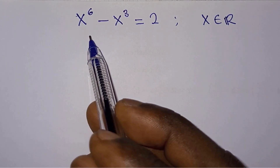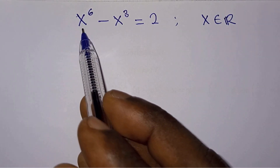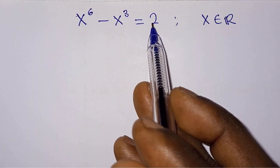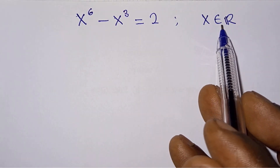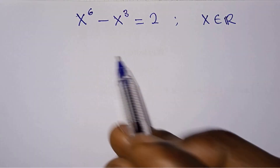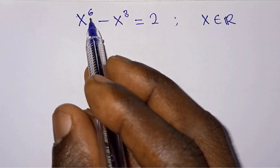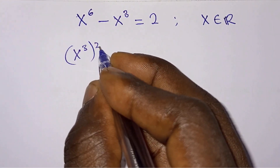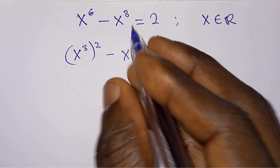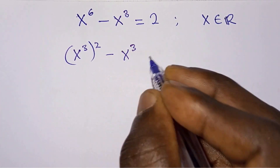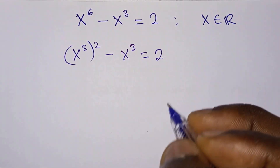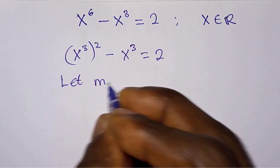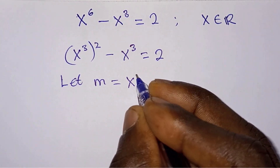Hello. In this video we find the values of x in x to the power 6 minus x to the power 3 is equal to 2, where x belongs to real numbers. So let's start. I'll write x to the power 6 as x to the power 3, all to the power 2, minus x to the power 3 is equal to 2. Then from here we will let m equal to x to the power 3.